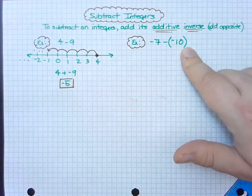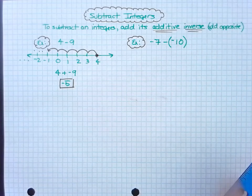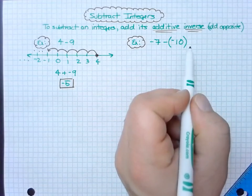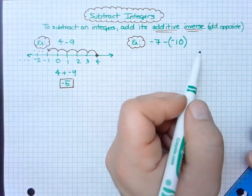So does the number get bigger, does it get smaller? Well, if I add two negative numbers together it would have gotten bigger. So I have a feeling the opposite is going to occur in this case.